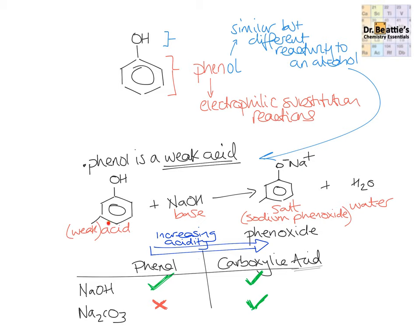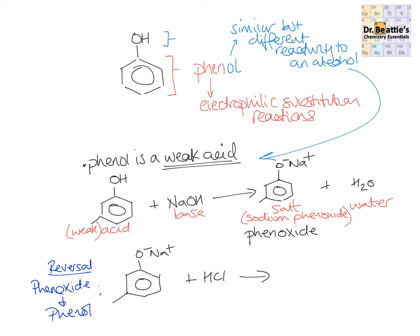Just as we've taken an acid and reacted with a base to form a salt and water, we can also take this salt and react it with a strong acid to reverse it. Taking sodium phenoxide and adding a strong acid — a source of H⁺ ions — that H⁺ ion displaces the Na⁺, which reforms the original phenol. The chloride ion and sodium ion are left behind to form the salt sodium chloride. It's basically a displacement reaction where you've swapped the sodium ion for the H⁺ ion.